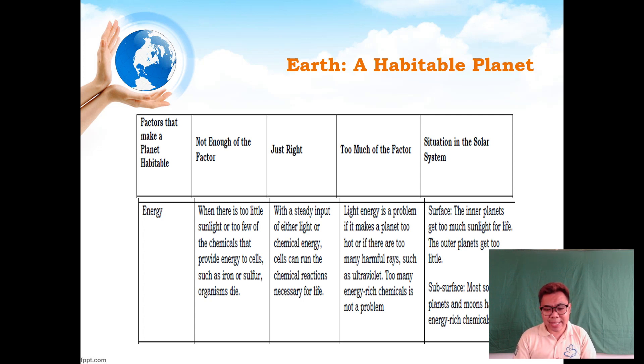If there's too much energy, light energy is a problem if it makes a planet too hot. If there are too many harmful rays such as UV rays or ultraviolet, that's harmful. Too many energy-rich chemicals is not a problem. But if there's too much light energy, it can lead to different problems, bringing hotness and leading to greenhouse effects.